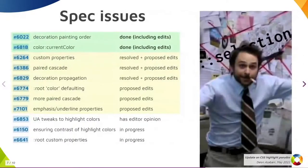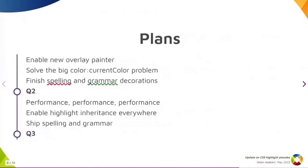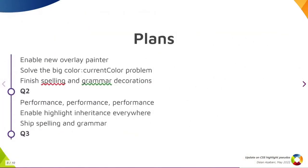That currentColor problem is one of many spec issues we found while implementing these features. The good news is that most of these issues now have resolutions, or at least proposed changes. After we enable the new overlay painter, we'll focus on the currentColor problem and the new spelling and grammar decorations. Once we get highlight inheritance performing well enough to enable it for all highlights, including selection, we should be able to ship spelling and grammar.